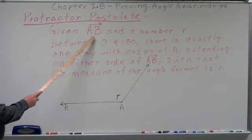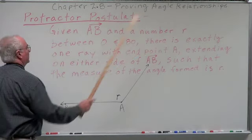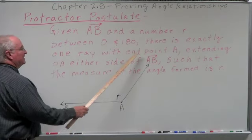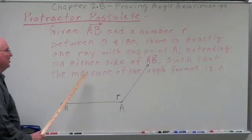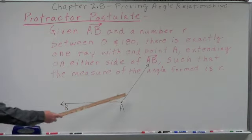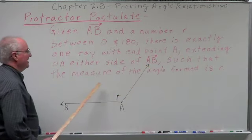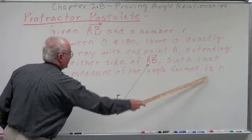Given ray AB and a number R that is between 0 and 180, there is exactly one ray with endpoint A extending on either side of AB. So we can bring it down this way or up this way such that the measure of the angle formed is R.